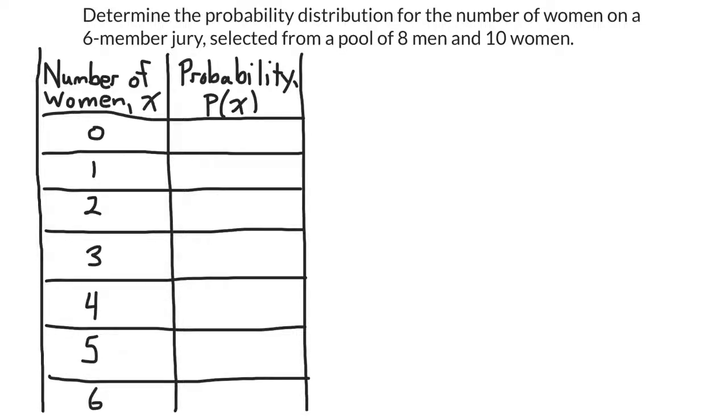If I want to use my probability formula, I need to know what the variables are. A is the number of successful outcomes. So in this case, success would be a woman being selected for the jury. So since there are ten women, there are ten possible successes. So A is ten.